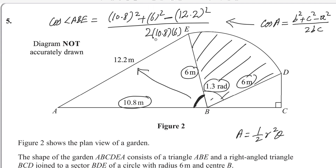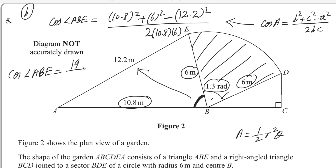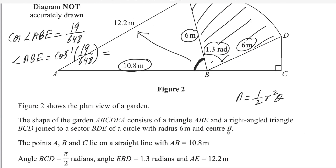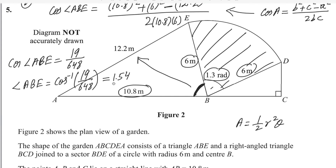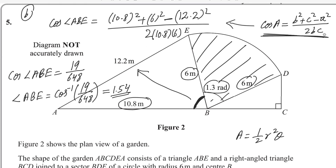Solve using a calculator. The cosine of angle ABE equals 19/648. Then take the inverse: angle ABE equals cosine⁻¹(19/648). Make sure your calculator is in radian mode. The answer to two decimal places is 1.54 radians. So this is the answer for the second part — you should know how to apply and memorize the law of cosines.